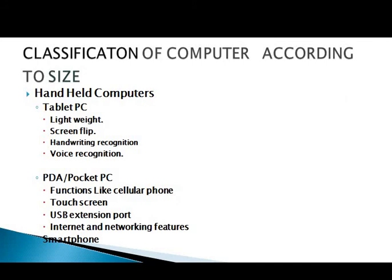The last category is handheld computers — those computers which we can hold in our hand. We have three computers in this category: tablet PC, PDA, and smartphone. Tablet PC is a lightweight computer with a flip screen feature. It comes with handwriting recognition using an electronic pen, so we can write on its screen, and also has voice recognition. PDA stands for Personal Digital Assistant, also known as a pocket PC. It looks like a mobile phone and can be carried in our pocket — it functions like a mobile phone and we can make calls using it.